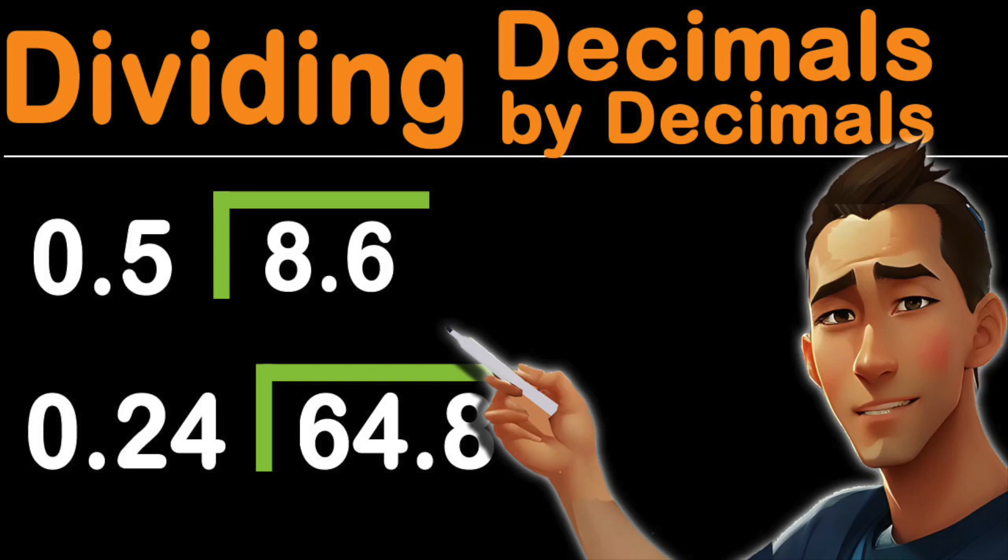In this video I'll be talking about dividing a decimal by a decimal. The first thing you want to look for is the divisor of the question, whether it's a decimal point or a whole number. In these examples, our divisors are all going to be decimals. Here is the first example: 8.6 divided by 0.5.